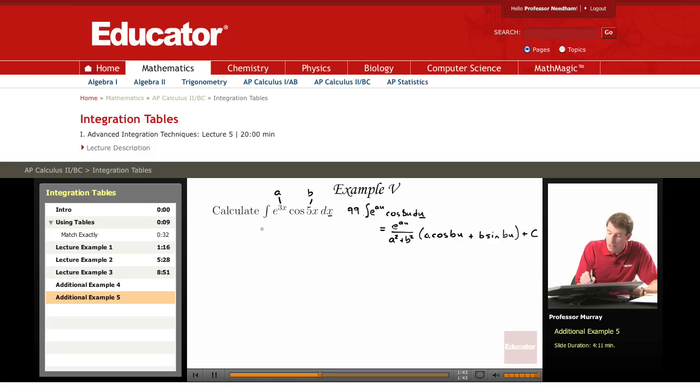So then we can read off the answer from this formula. We have e to the au, that's e to the 3x. Now, a squared plus b squared, that's 3 squared plus 5 squared. 3 squared is 9, 5 squared is 25. So 9 plus 25 is 34.